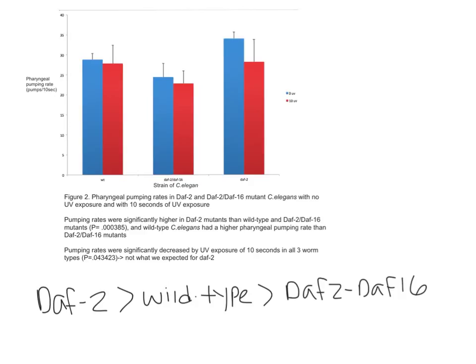Wild-type C. elegans also had higher pharyngeal pumping rates than DAF2-DAF16 mutants. Additionally, UV exposure decreased pharyngeal pumping rates in all three of the worm strains.